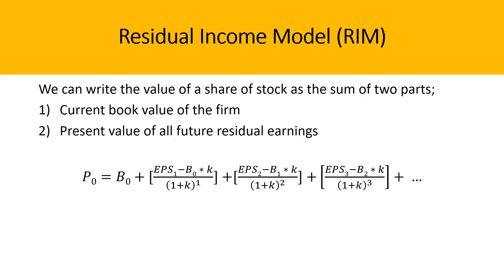When the residual income model is used to value a company, you can split the formula into two segments. One: the current book value of the firm, identified as B0. And two: the present value of all future residual earnings, identified as EPS1 minus the current book value times the discount rate, divided by 1 plus the discount rate raised to n — in this case 1, the period.